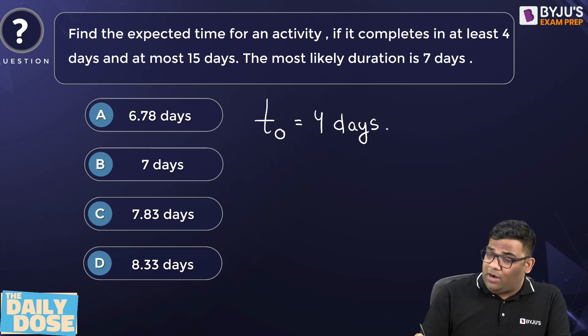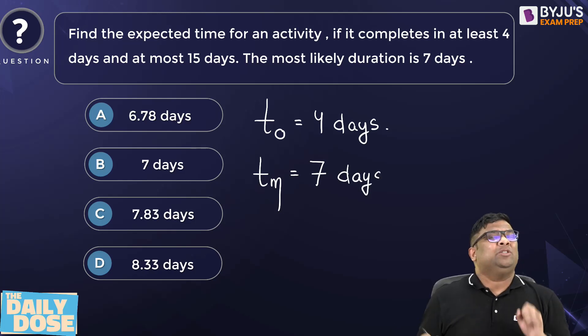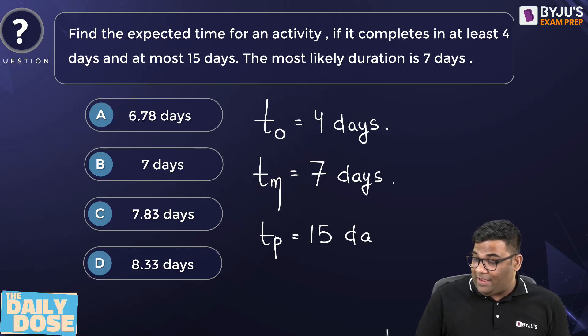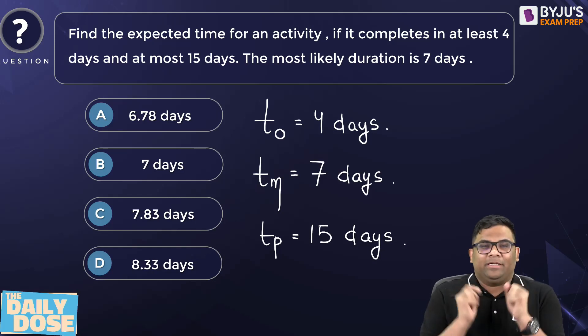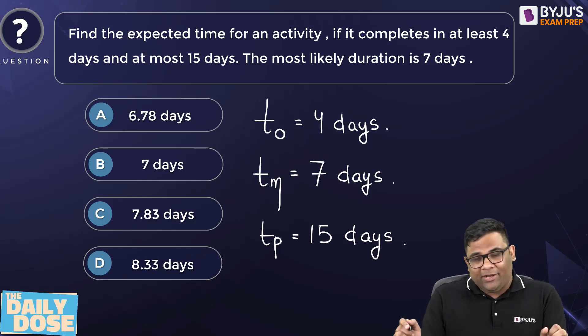Then, most likely is given as seven days. As I told, it is more than your T0. And at most means the pessimistic, which is 15 days. So this is the question. I expect everyone to solve this question and write the answer in the comment section. Thank you very much.